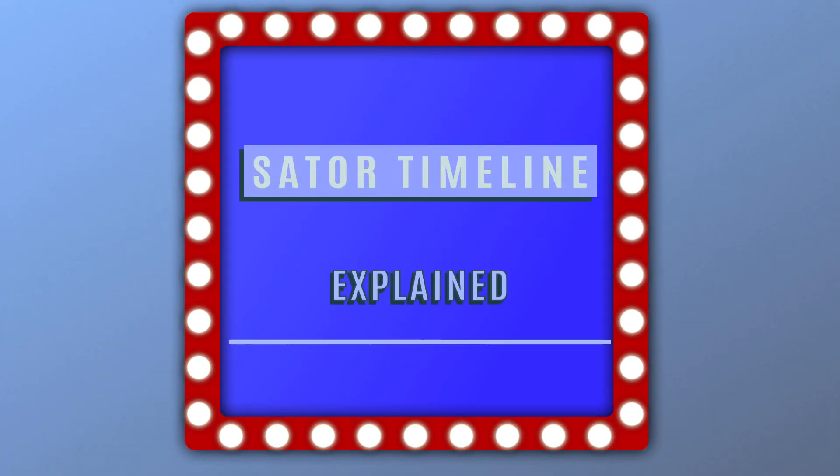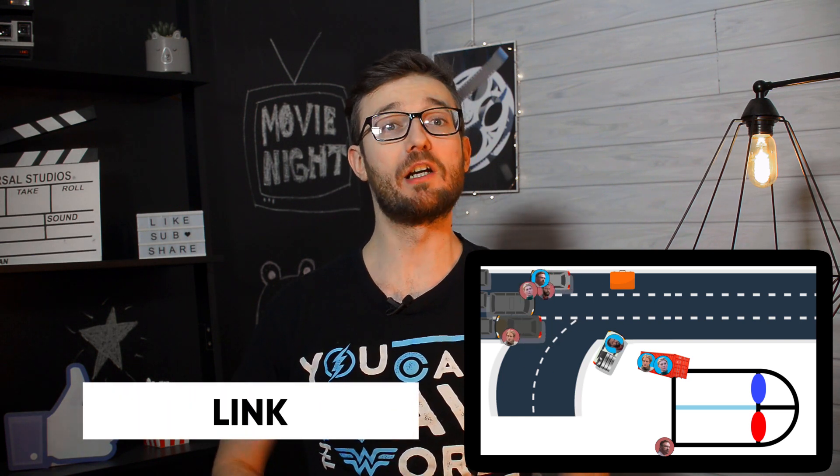Let's talk about what Sator did during the highway scene. Many of you were still confused about Sator's timeline after watching my animation of the highway scene, so I'm going to go step by step on what this bad guy did and how he got plutonium. This is not really plutonium but part of the algorithm, but for simplicity I will call it plutonium. I'm going to use my other video which shows the whole scene from the freeway, so I recommend you give it a quick preview before watching this video.